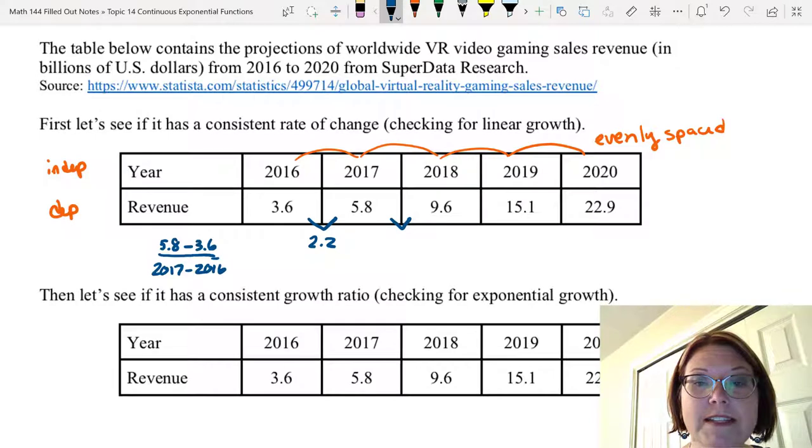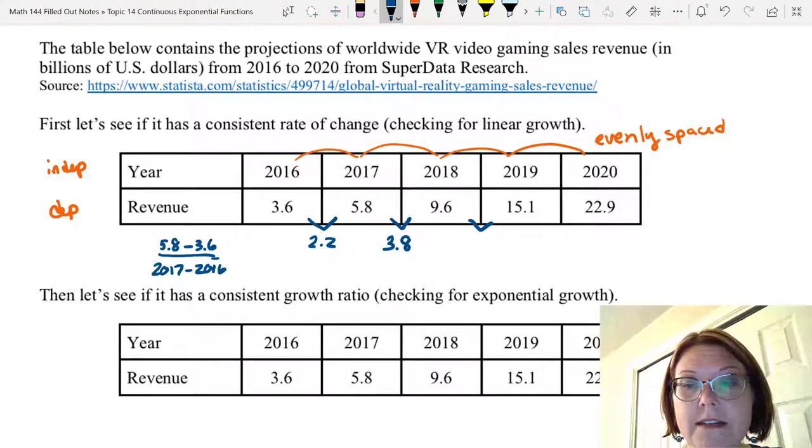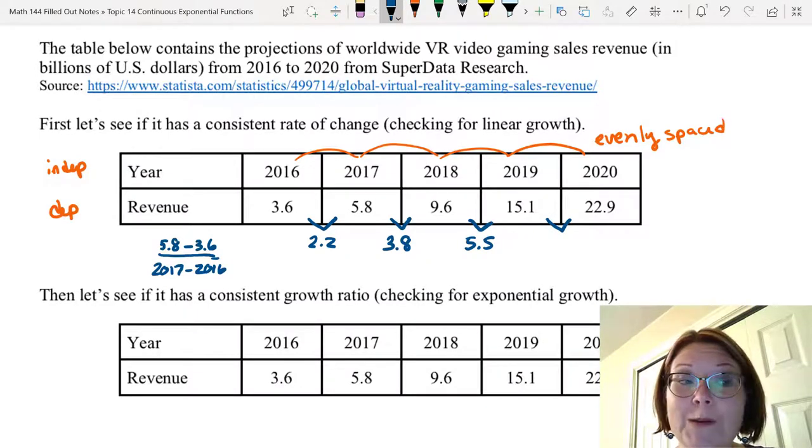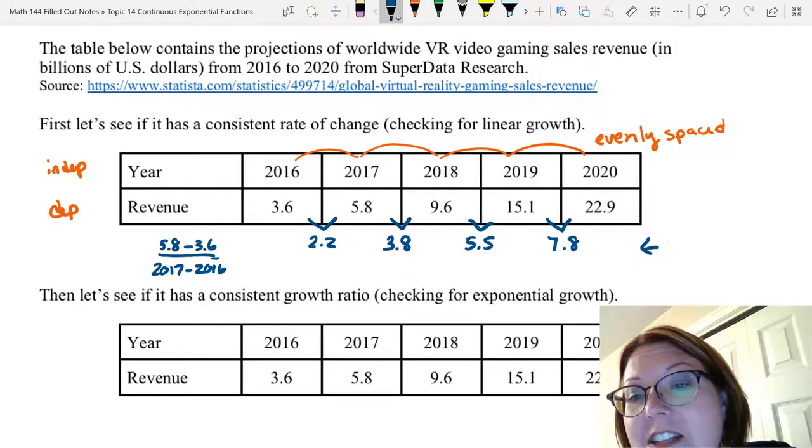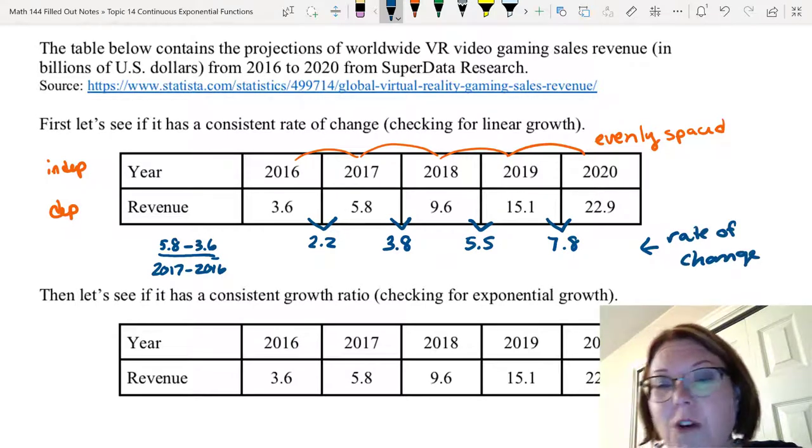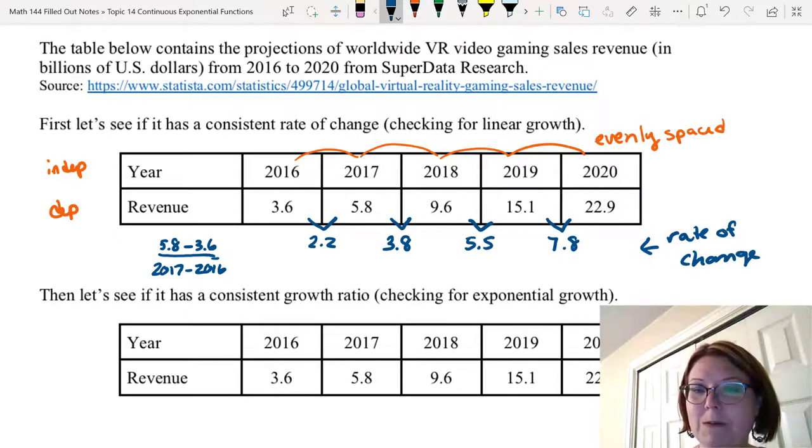The next one is 9.6 minus 5.8, which is 3.8. The next one is 15.1 minus 9.6, which is 5.5. And the last one is 22.9 minus 15.1, which is 7.8. You can see that this rate of change that we've calculated is not very consistent. It seems to be growing as we move across the data points.